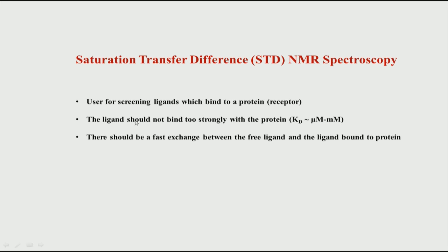We are not trying to screen for ligands that bind strongly; we are trying to find molecules that have at least a weak binding to the protein. The consequence of having a weak dissociation constant is that the molecule exists in fast exchange between the ligand and the protein. The ligand rapidly exchanges between the bulk free form and the protein-bound form, and this is exactly what we want to exploit in STD NMR.